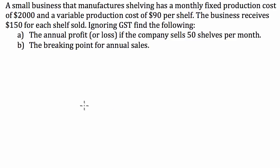So let's have a look at what we've got. A small business that manufactures shelving has a monthly fixed production cost of $2,000 and a variable production cost of $90 per shelf. The business receives $150 for each shelf sold, ignoring GST. Find the following: the annual profit or loss if the company sells 50 shelves per month, and the break-even point for annual sales.